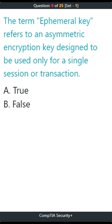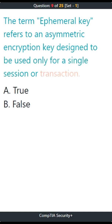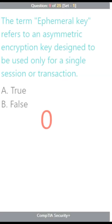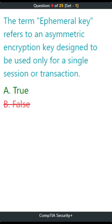Question 9. The term ephemeral key refers to an asymmetric encryption key designed to be used only for a single session or transaction. A. True, B. False. The correct answer is A. True.